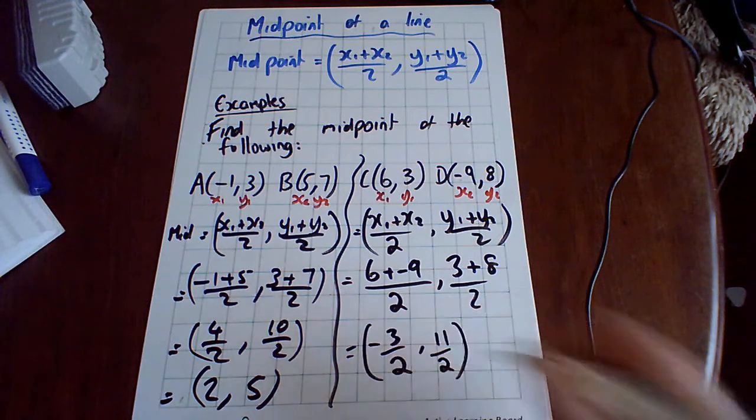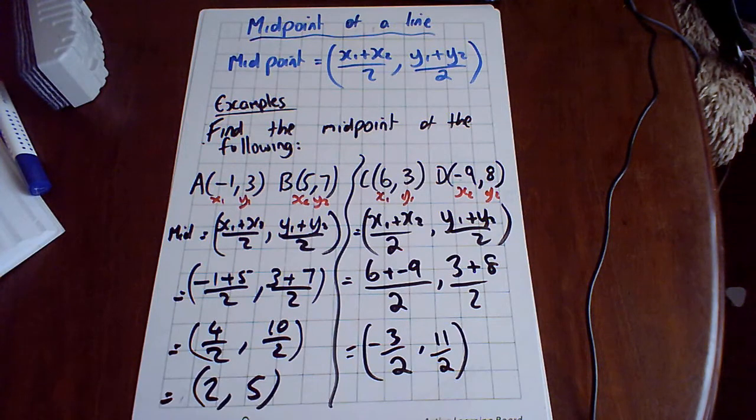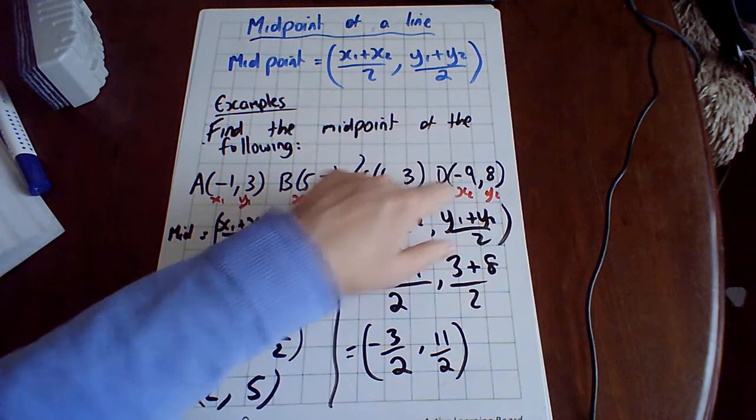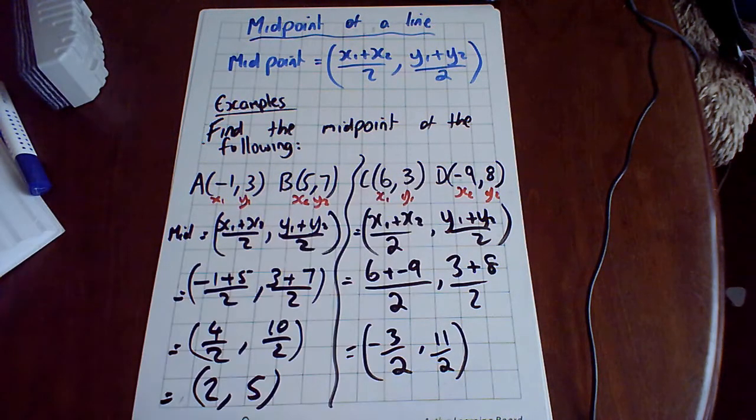You can leave it like that, as a fraction, or you could put them in as minus 1 and a half or 5 and a half. But usually leaving it as a fraction is fine. Here, obviously it would have been a lot harder to pick out that the middle of 3 and 8 is 11 over 2.